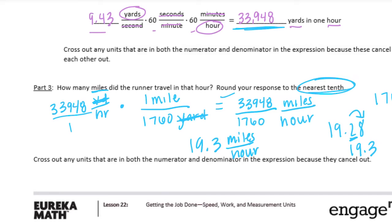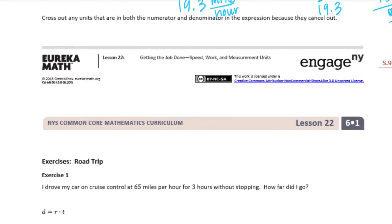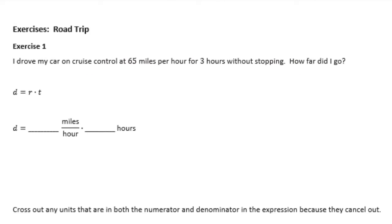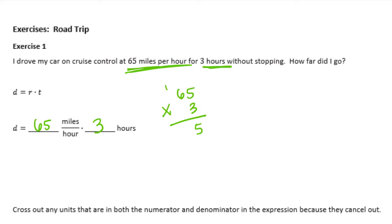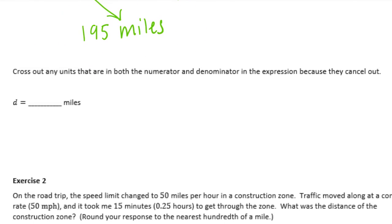Cross out any units that are in both the numerator and denominator. Exercise 1: I drove my car in cruise control at 65 miles per hour for 3 hours without stopping. How far did I go? Distance equals rate times time. The rate is 65 miles per hour for 3 hours. So we do 65 times 3, and we get 195 miles. The hours cancel, leaving just miles. The distance is 195 miles.